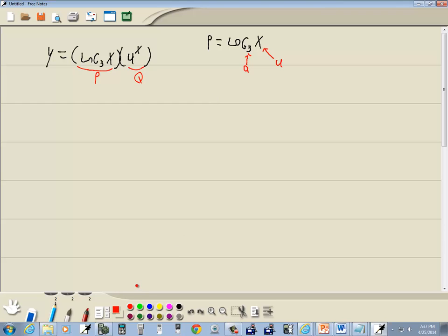To find the derivative, we're gonna have 1 over natural log of a and then 1 over u and then u prime. Okay, so P prime, a is 3, so we're gonna have 1 over natural log of 3, 1 over u so 1 over x times u prime. Well the derivative of x is 1, so that drops away. So P prime is gonna equal 1 over x natural log of 3.